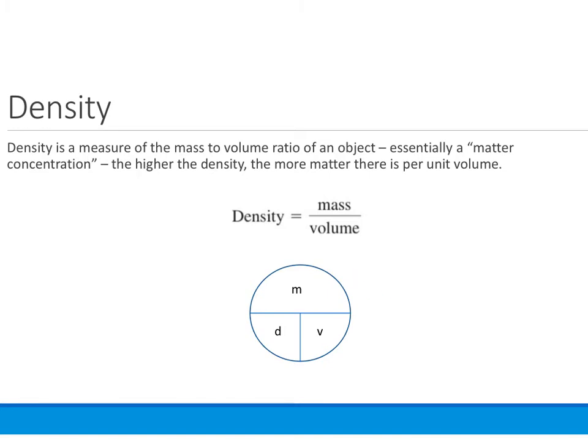You can also make a circle, and you can remember this by the top is M, and then you have bottom D and V. You can remember this as, my dog vomits. And what's nice about this is you can cover up one of the units. If we cover up density, it's mass over volume. If we cover up mass, it would be density times volume. If we're looking for volume, it's mass over density. So we can actually simplify the algebra quite a lot by using this little density wheel.